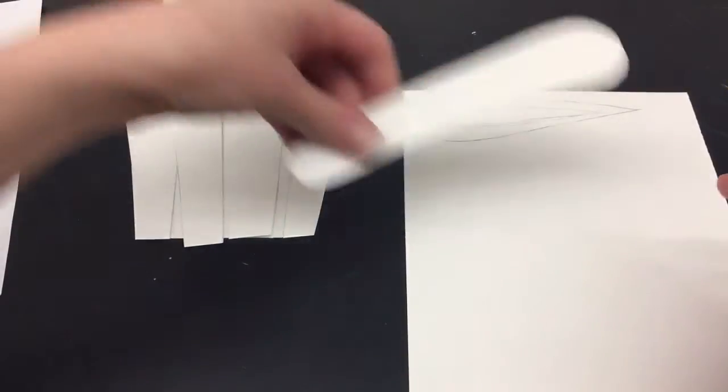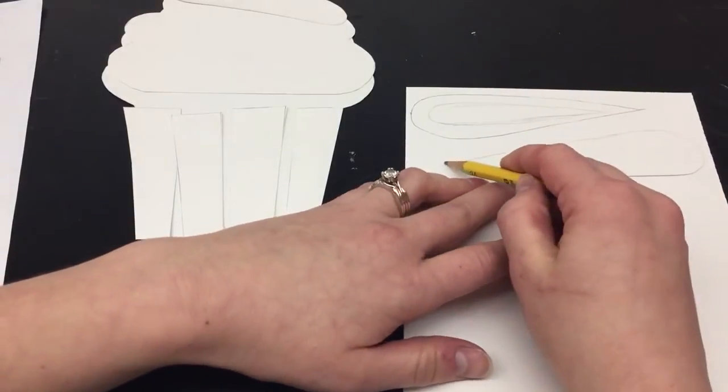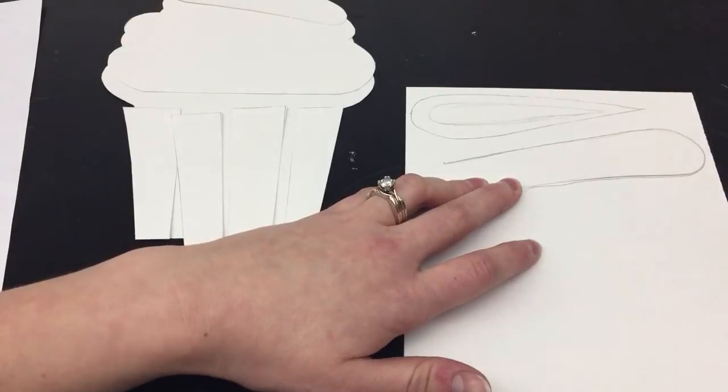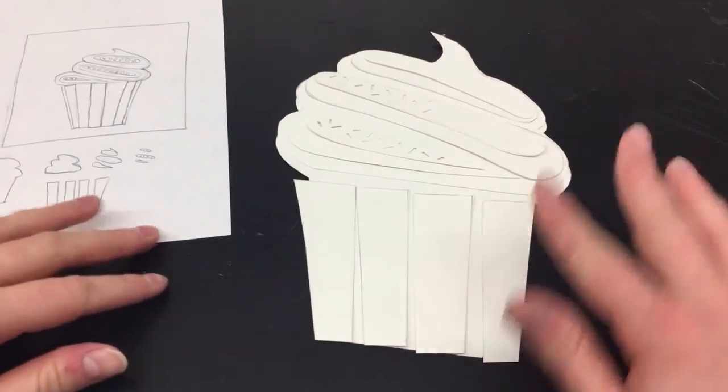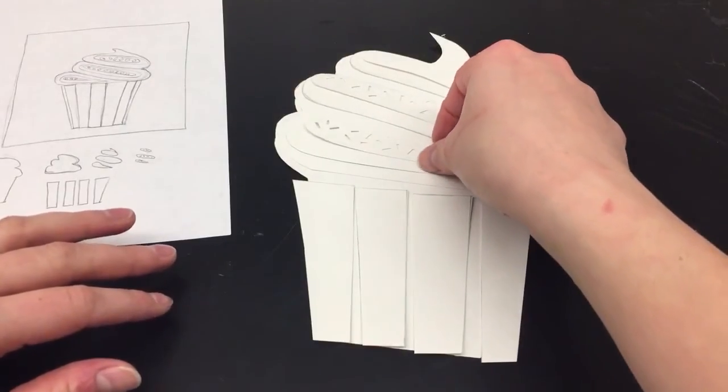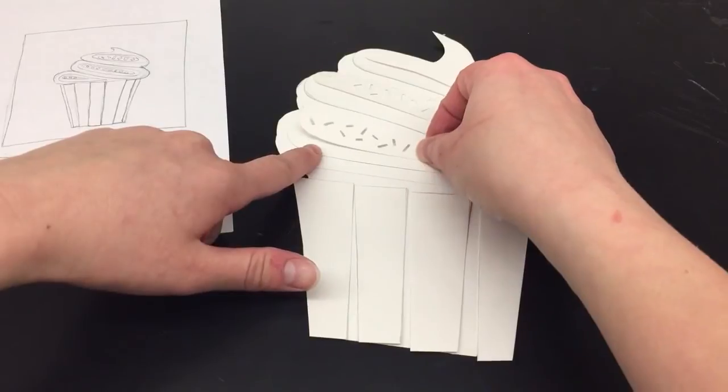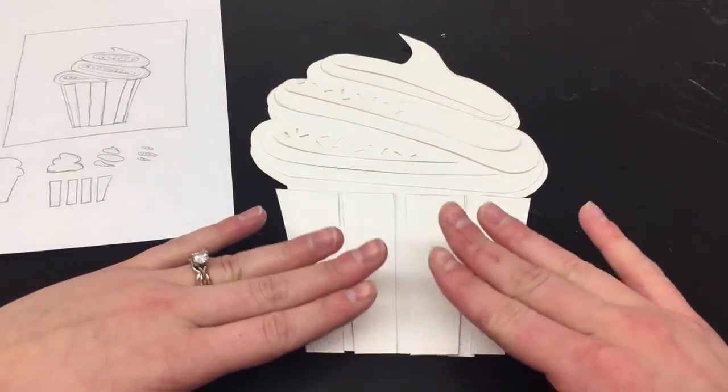And then I can do that with the other three and then cut them out and add them as my last layer before I start gluing everything together. Once I finished cutting out my final layer and cutting in the negative space that I wanted, I now have all of my layers that I'm ready to glue together and assemble.